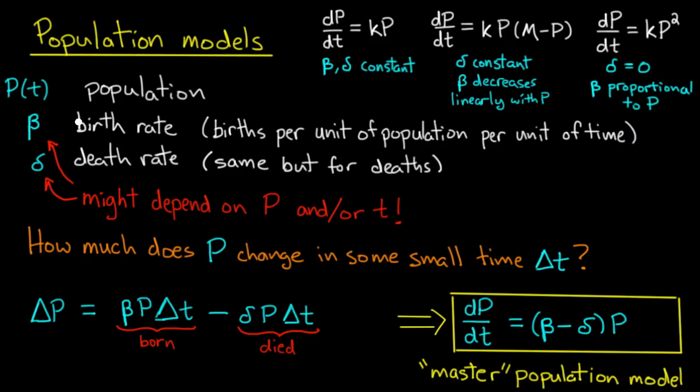Well I can't incorporate it through a birth rate or a death rate, because I catch 100 fish every year, no matter what the population is, as long as there's enough in the pond. And so it's not part of the birth rate or the death rate.